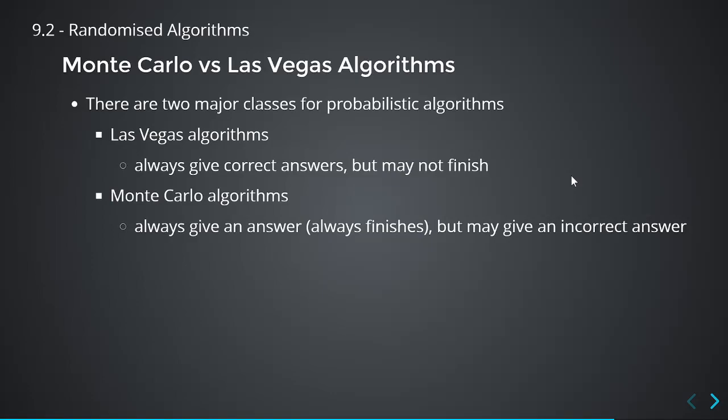These are all names of casinos. A Las Vegas algorithm always gives you the correct answer if it finishes, but it may not finish. If something is deterministic, it will finish for sure — it just may take a very long time. With Las Vegas, there's a chance it won't finish, and it's kind of subtle. Monte Carlo, on the other hand, will always give you an answer and will always finish in time. But the answer it gives you may be incorrect. Monte Carlo is the version we've seen — like matrix multiplication verification and Fermat primality testing.